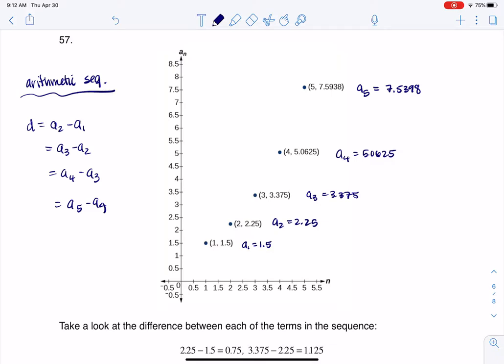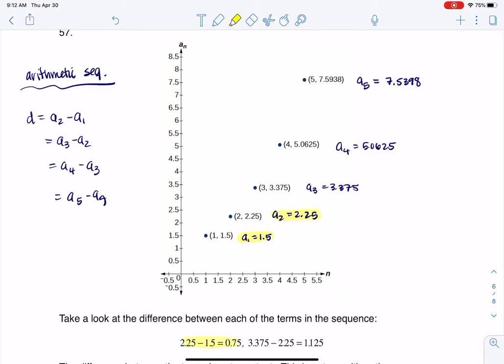So the first thing I did was I subtracted 1.5 from 2.25. That's what you see me doing right here. And I found out that that difference was 0.75. So that would mean the difference between all of these next terms needs to be 0.75, or I do not have an arithmetic sequence.